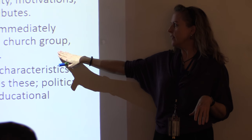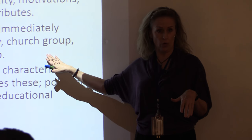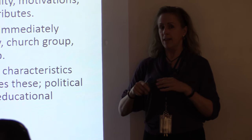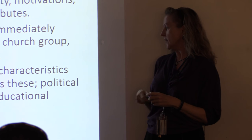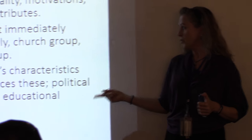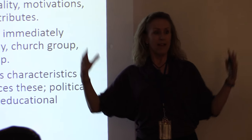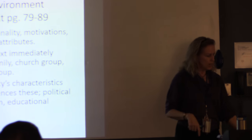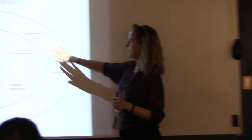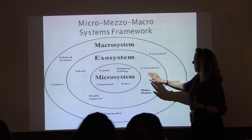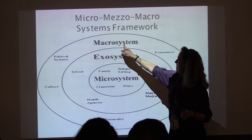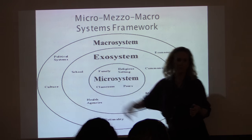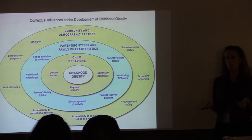The meso level is the context immediately surrounding the client: family, church group, close friends, and work group. The macro level covers the larger society's characteristics and how the client experiences these — for example, the political system, social stratification, educational system, and the economy. In the framework diagram, the person is at the center, surrounded by the meso system — community, mass media, health agency, school — and then the macro: economic society, nationality, culture, and political system.